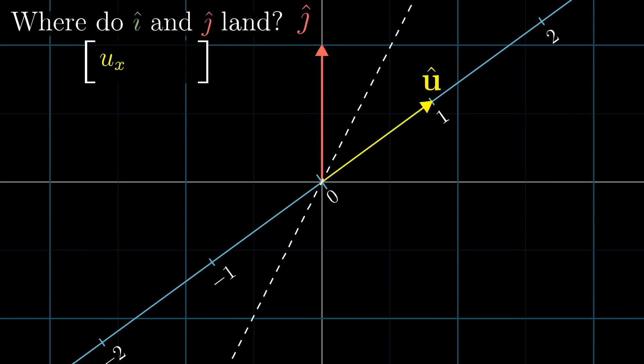The reasoning is almost identical for the j-hat case. Think about it for a moment. For all the same reasons, the y-coordinate of u-hat gives us the number where j-hat lands when it's projected onto the number line copy. Pause and ponder that for a moment. I just think that's really cool. So the entries of the 1 by 2 matrix describing the projection transformation are going to be the coordinates of u-hat.